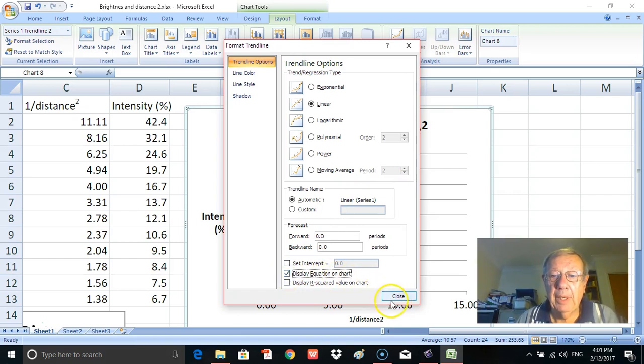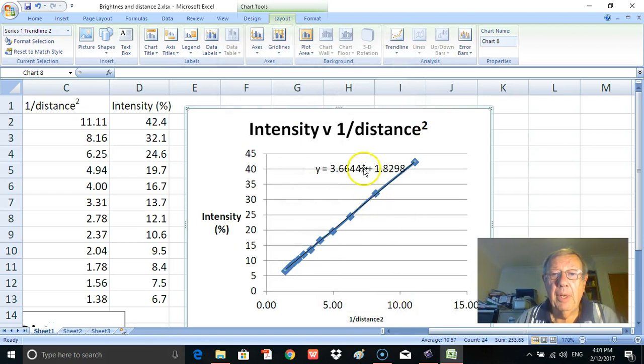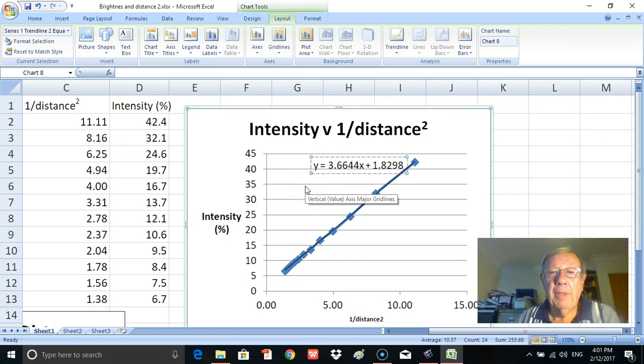So if I do that and click close, there it is, the equation. And you can see there the value of the gradient there. So we've worked that out to quite a number of decimal places, and this is quite handy in other circumstances as well.